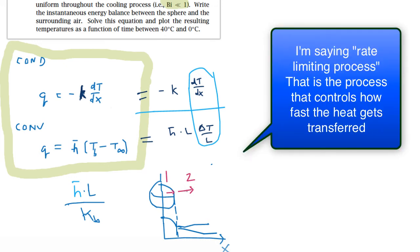You can imagine that if this process was really fast, one was fast and two was slow, two would be the rate-limiting process. Or if we had the other way around, two was really fast and one was really slow, then one would be the rate-limiting process.